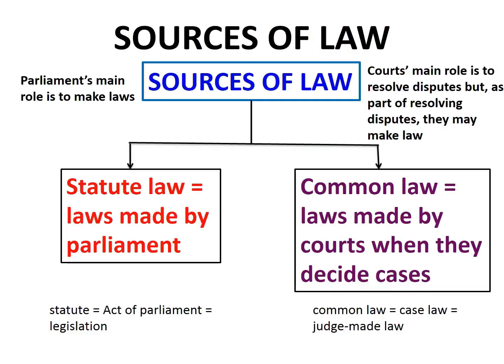You'll recall that we have been looking at the different sources of law. There are two sources of law. First, there is law made by the courts when they decide cases. This is called common law. Common law consists of precedents — that is, legal rules or principles — made by judges when dealing with a new case not covered by existing legal rules or principles, or when interpreting a statute made by Parliament.